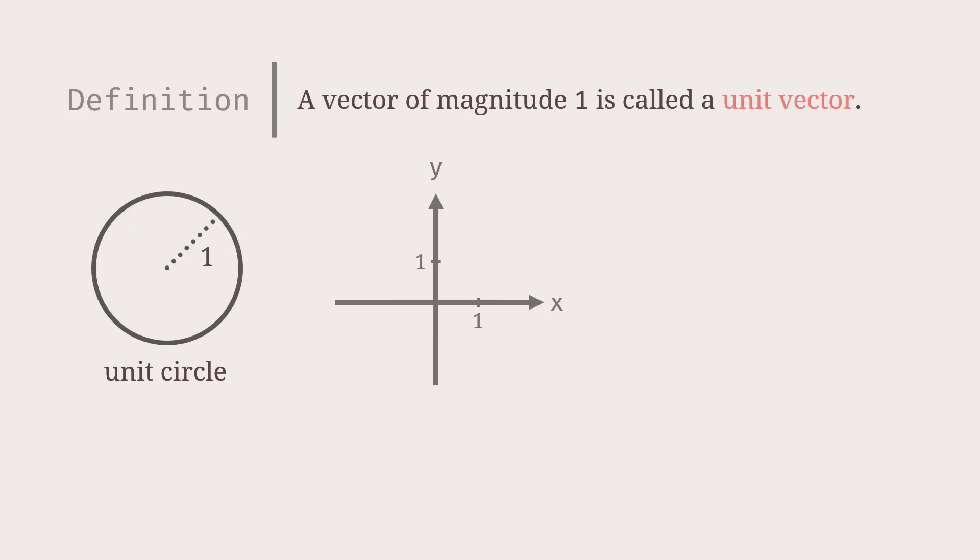Here's an example of a unit vector in the plane. You can see that its length is 1. Here's another example: negative 1 third, 2 over 3, negative 2 over 3. We can see that the magnitude is 1 by calculation.